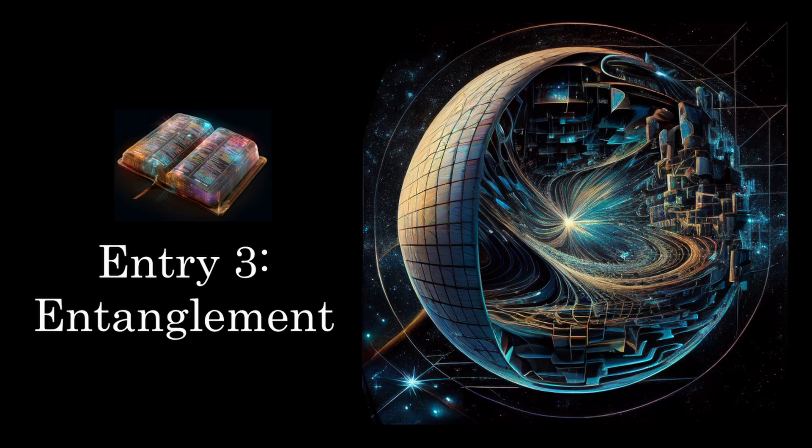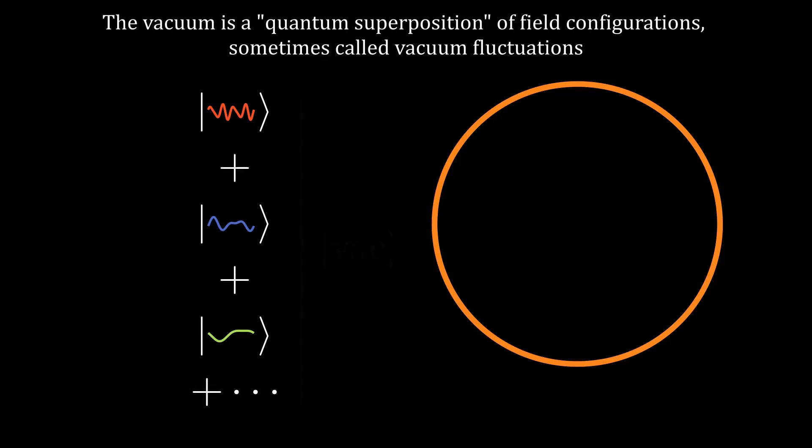We have now learned two entries in the holographic dictionary. That ground states in the CFT map to empty space in the bulk, and that thermal states in the CFT map to black holes in the bulk. Let's return now to the question of the physical meaning of the bulk geometry. To understand this, we first need to introduce the idea of quantum entanglement. Going back to the CFT, we can have different field configurations, and the vacuum state actually contains many such distinct field configurations.